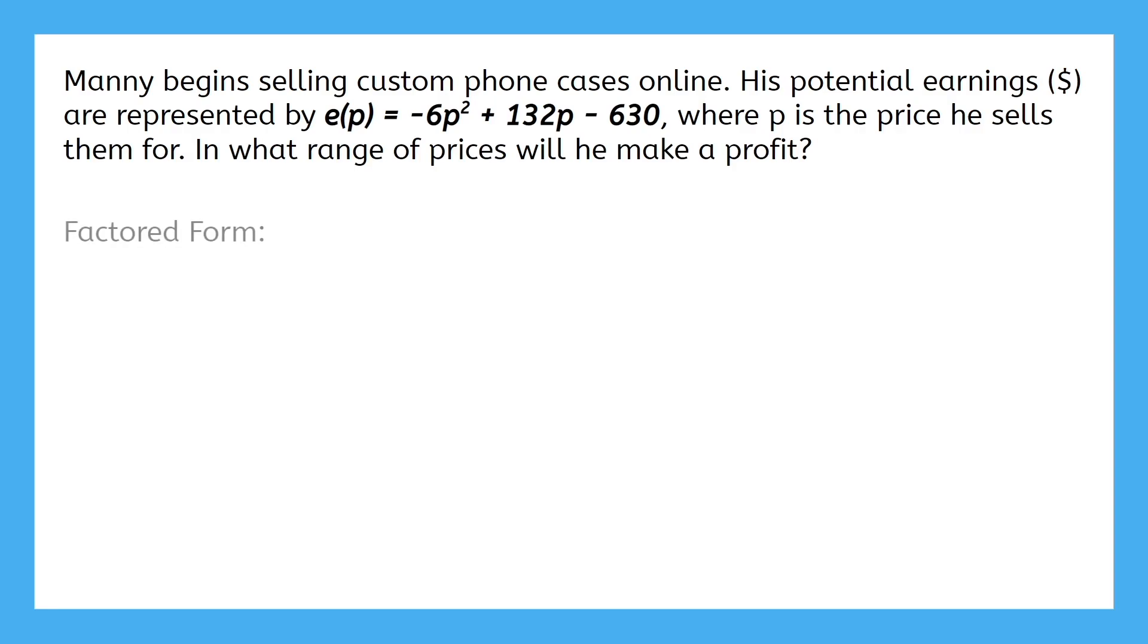First, we need to find the factored form. There's a negative leading coefficient and a GCF of 6. That GCF is just a constant though, so it doesn't give us a root. We can, however, factor the remainder into (p - 7) and (p - 15).